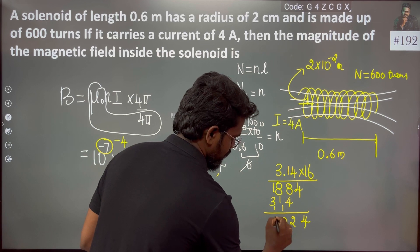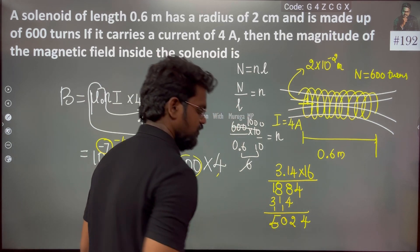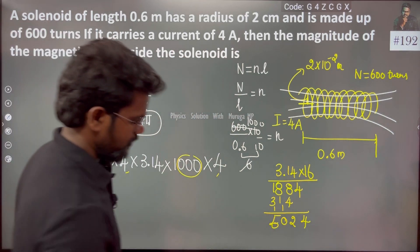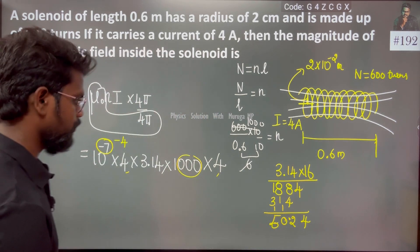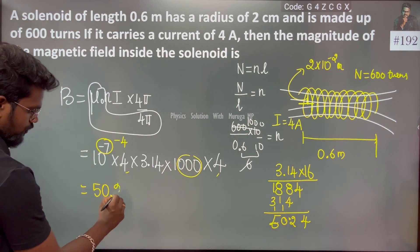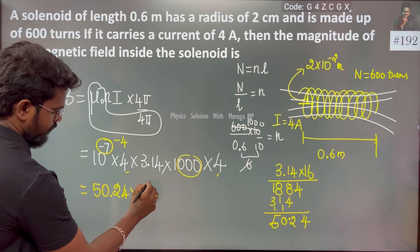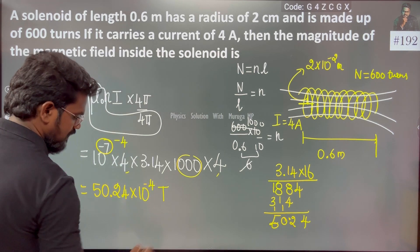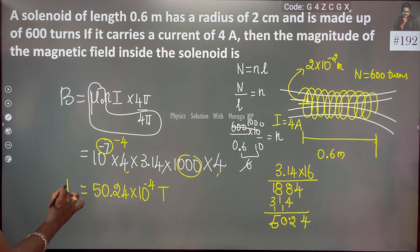This gives us 50.24 times 10 to the power minus 4 tesla. Very simple - that's the magnetic field.